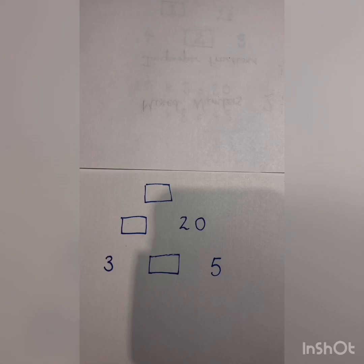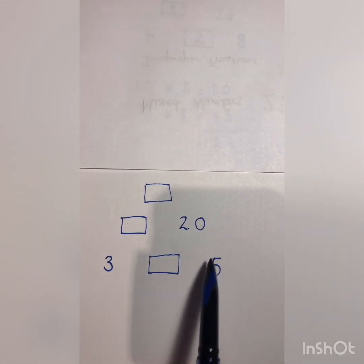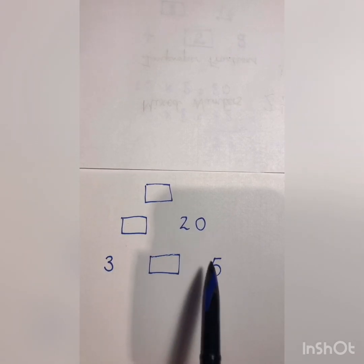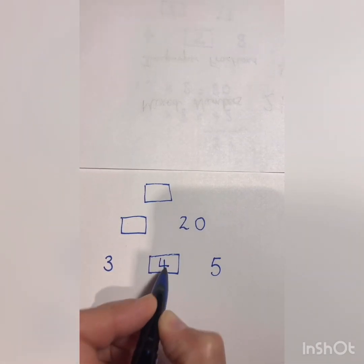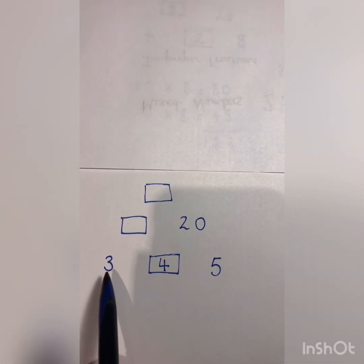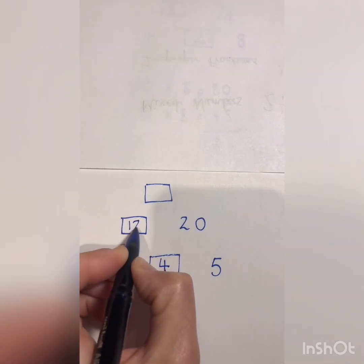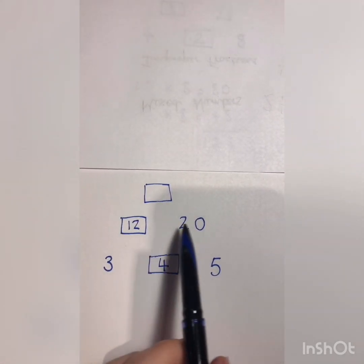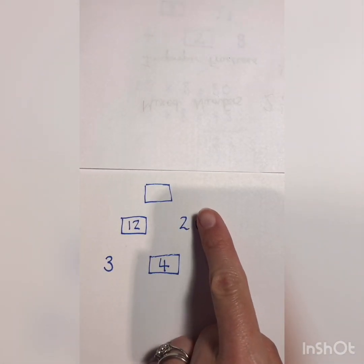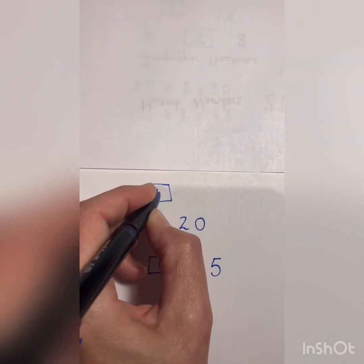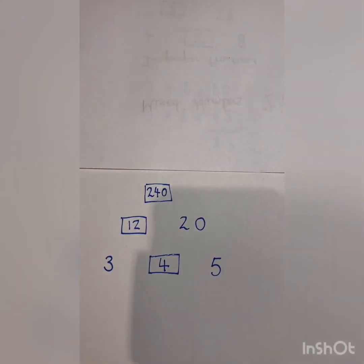Okay, have you tried it? So we need to look at the number five, because we've got a number above to help us — that's our clue. Something times five is twenty — we know that's four. Then we can simply fill it in: three times four is twelve. And then twelve times twenty — we can cover up the zero, do two times twelve which is twenty-four, then add the zero back on, which is two hundred and forty.